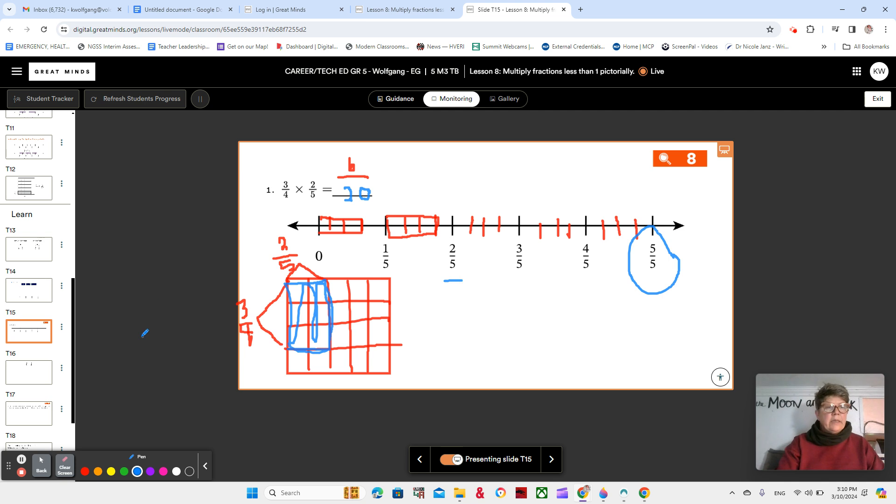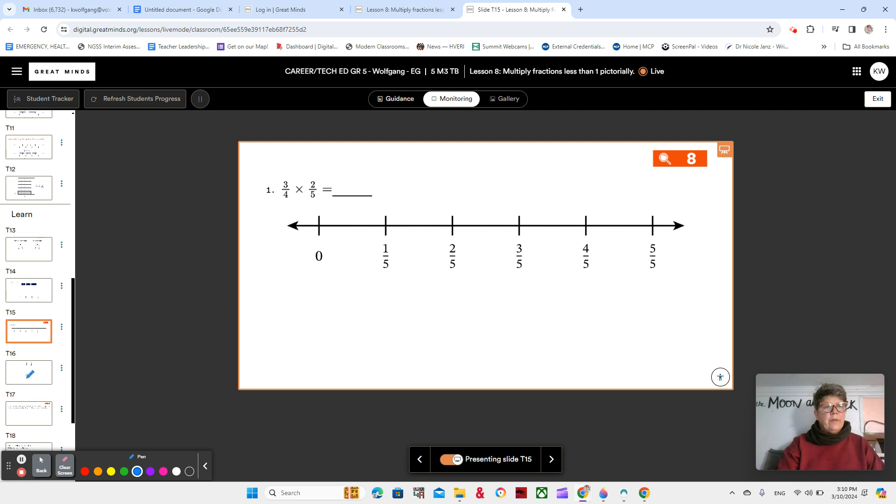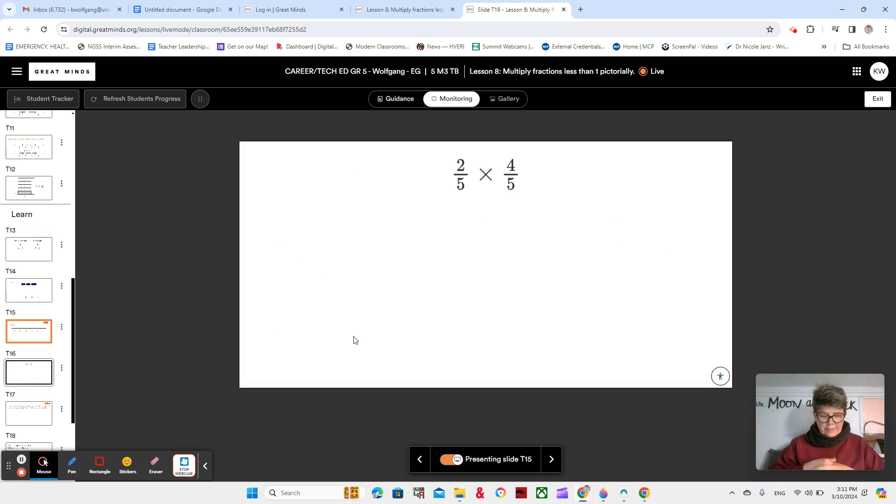If you didn't get this written down, you can pause me and get it written down because I'm going to erase it and it does need to be in your notes. Okay, very good. Let's look at two fifths times four fifths. What does that mean? Two fifths of four fifths. Let's draw a model.